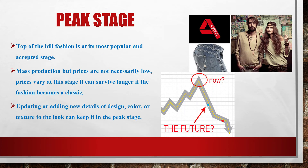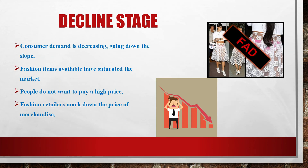In the peak stage, top-of-the-hill fashion is at its most popular and accepted stage. Mass production is done but prices are not necessarily low. Prices vary at this stage; it can survive longer if the fashion becomes a classic. Updating or adding new details of design, color, or texture to the look can keep it in the peak stage.